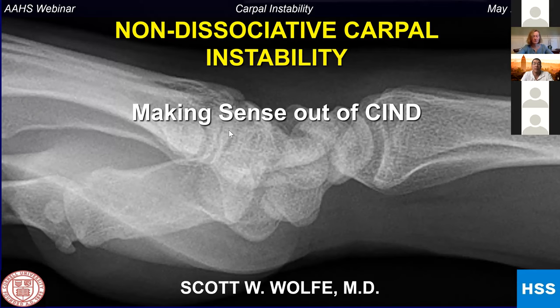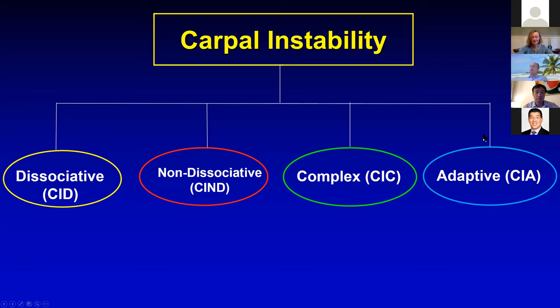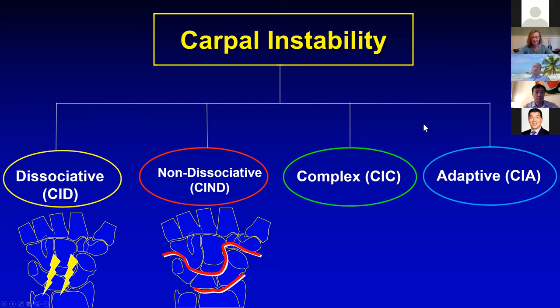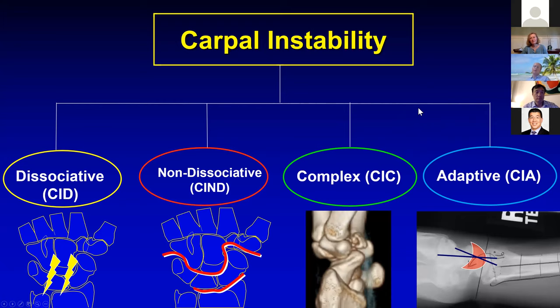One of the problems with CIND is it's very complex, and the waters have been muddied a bit. I have no financial interest to disclose. Carpal instability comes in a number of flavors: dissociative — disruption of the interosseous ligaments as Steve talked about. This talk will be about the non-dissociative, where ligaments are disrupted between the carpal rows or between the radius and the radiocarpal joint. Complex includes perilunates and longitudinal disruptions of the carpus. Adaptive tends to be with another cause, like a distal radius fracture malunion. We'll concentrate on non-dissociative instability.